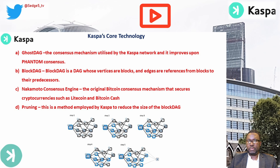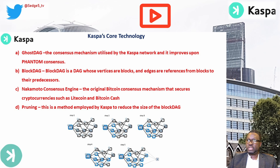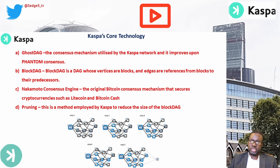Core technologies: First, GhostDAG — the consensus mechanism utilized by the Casper network — improves on the Nakamoto consensus. Central to GhostDAG's technology is the idea that blocks become exponentially difficult to reverse as time progresses. Second, BlockDAG — a Directed Acyclic Graph — is a mathematical concept for a directed graph with no directed cycles. In the context of distributed ledgers, a BlockDAG is a DAG whose vertices are blocks and edges are references from blocks to their predecessors.